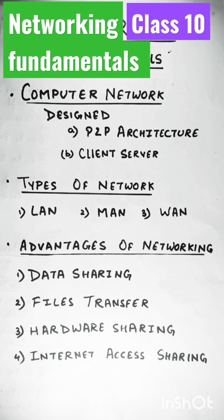In a peer-to-peer network, each terminal has an equally competent CPU. The second architecture is client-server architecture, in which certain computers have special dedicated tasks, providing services to other computers.